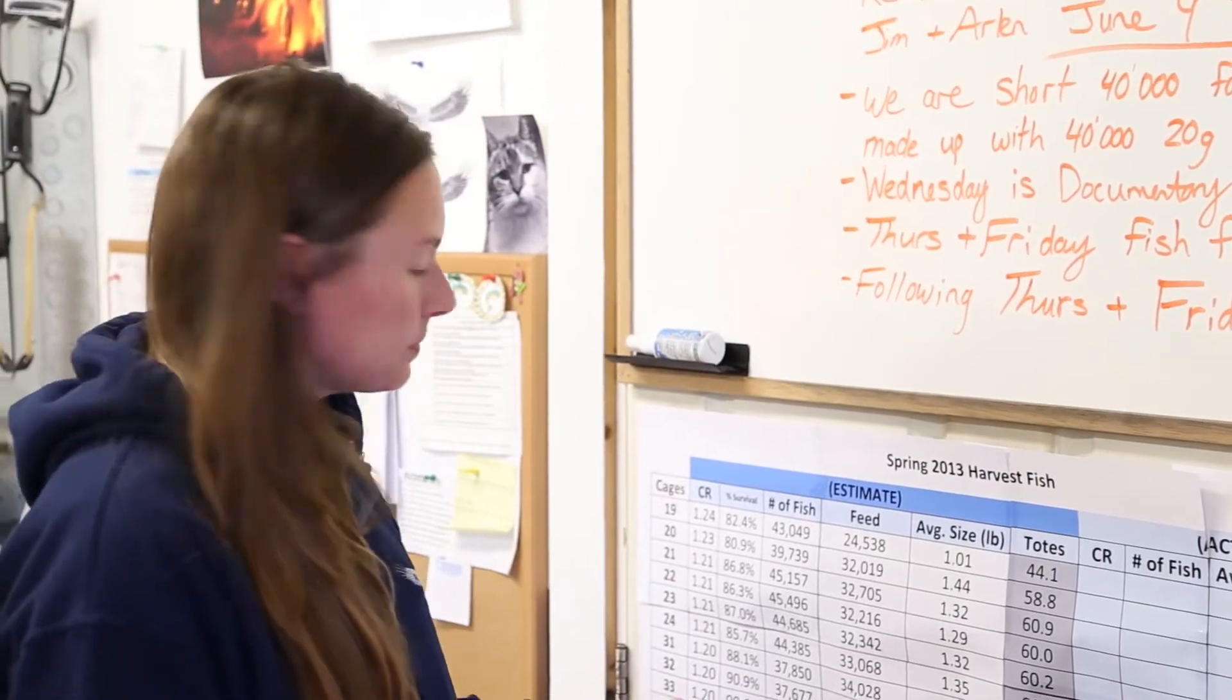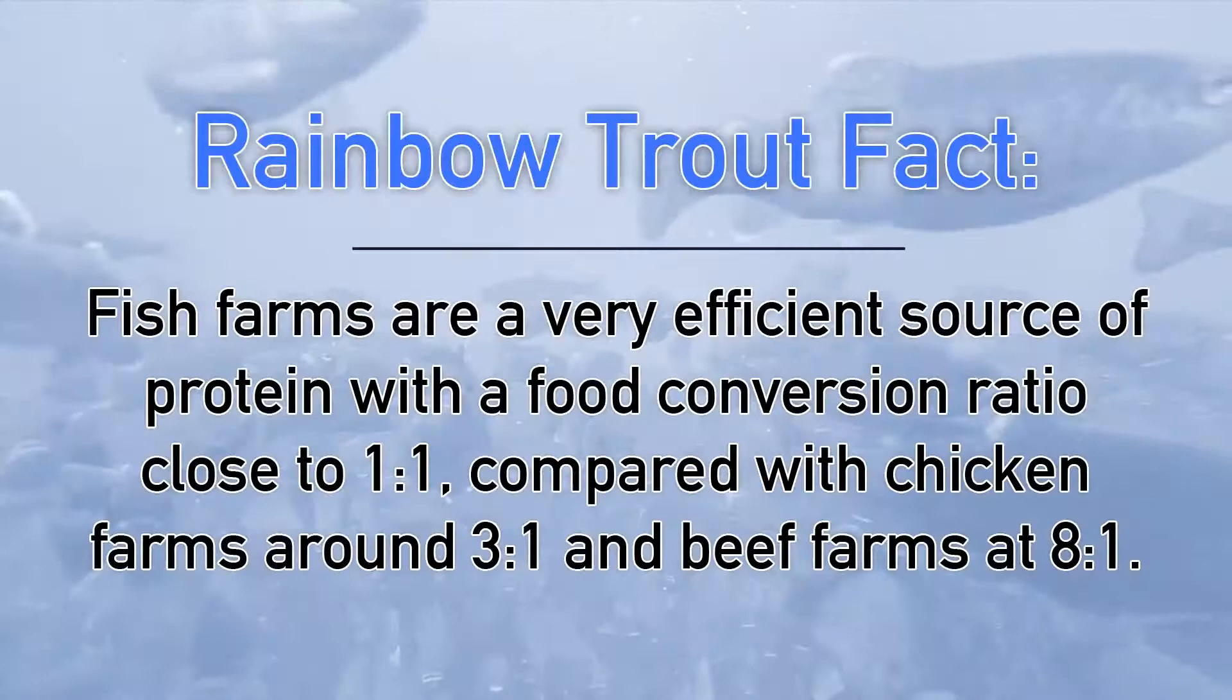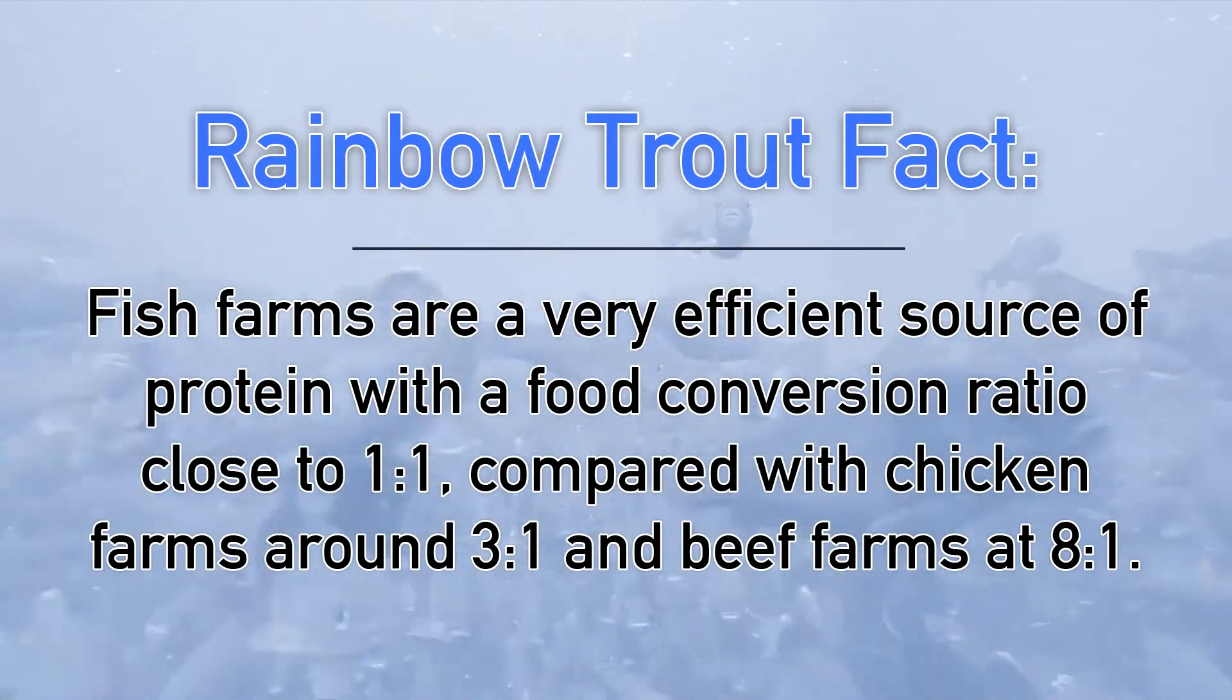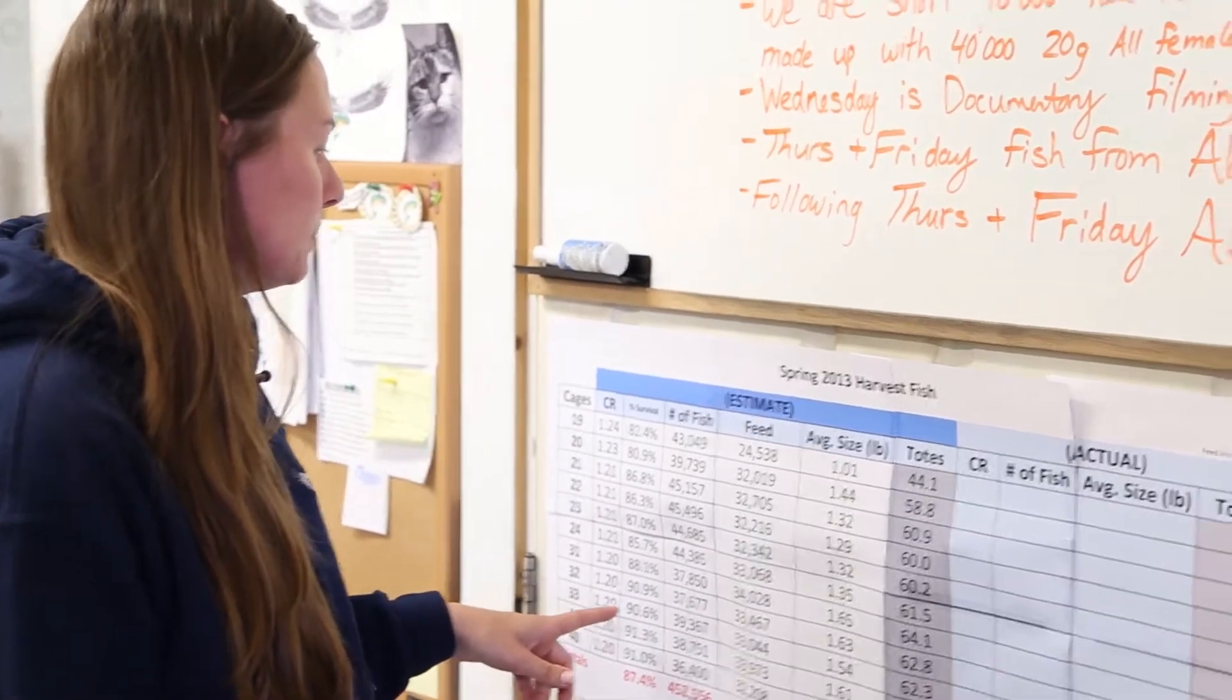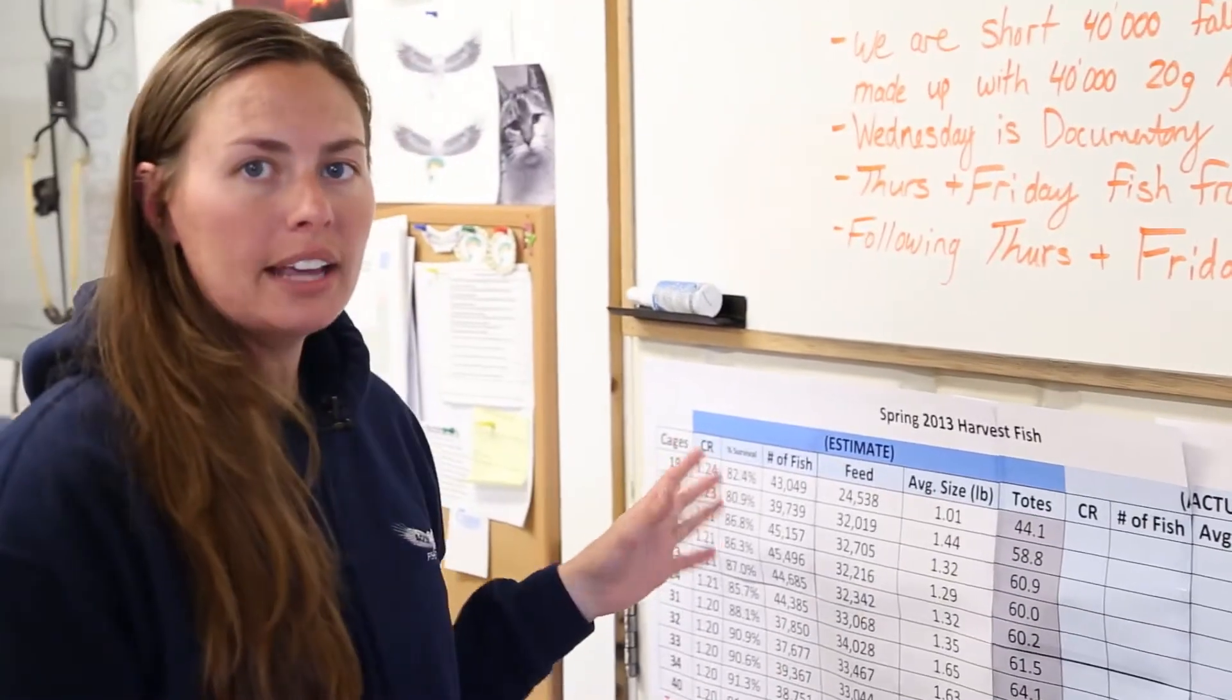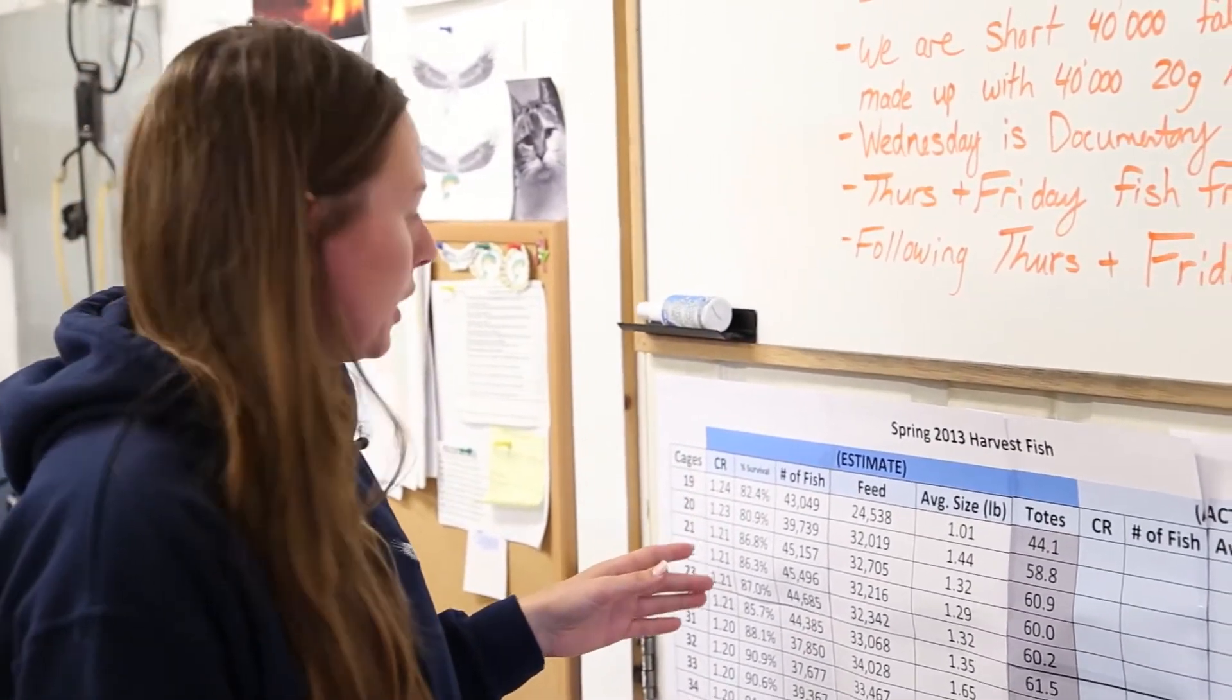So lower the better. You want a lower conversion rate, more fish. We have an estimated percent survival. We usually average about 85% and that's across the board at all fish farms.